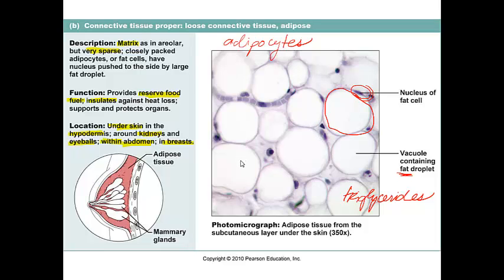There are two types of fat: brown fat and white adipose tissue. The difference is in the amount of mitochondria — white fat stores have less mitochondria than brown fat stores, so the energy amount provided differs between the two. There is a lot more brown fat found in babies, for example.